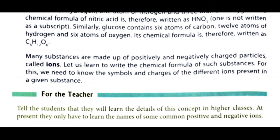Many substances are made up of positively and negatively charged particles, jis ko ions kaha jaata hai. What are ions? Ions are the positively and negatively charged particles. Let us learn to write the chemical formula of such substances. For this, we need to know the symbols and charges of different ions present in the given substances — hameen un chemical symbols ke atoms ke molecules ke charges ko janna jaruri hoota hai.